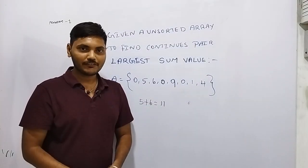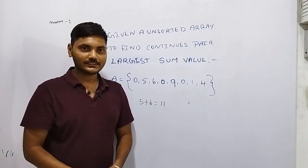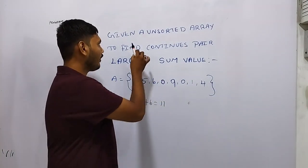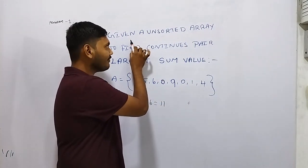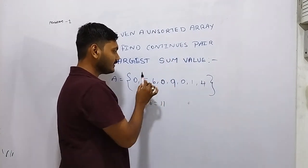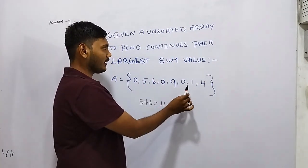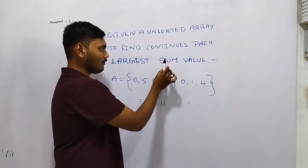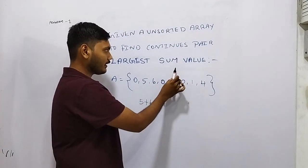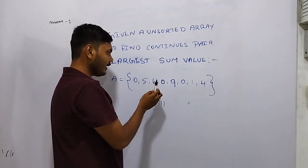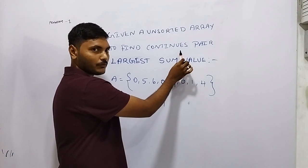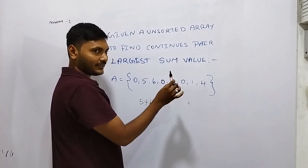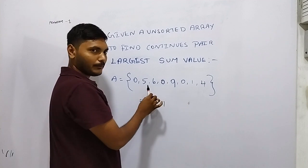Let's talk about the Zogo Interview Programming Series. If we have a given unsorted array, we can use continuous pairs to find the largest sum value. We can use continuous pairs with values like 10 and 6, and we can use the largest number that we have.